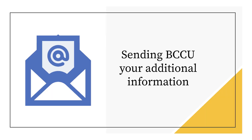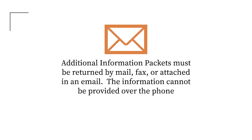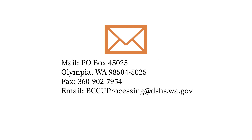Sending BCCU your additional information: Additional information packets must be returned by mail, fax, or attached in an email. The information cannot be provided over the phone. Additional information can be sent to P.O. Box 45025, Olympia, Washington 98504-5025; faxed to (360) 902-7954; or emailed to bccuprocessing@dshs.wa.gov.